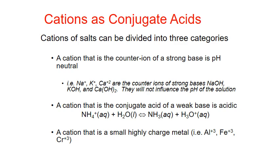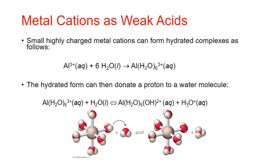Finally, metal cations that are small and highly charged will also form weakly acidic solutions. Small metal cations with high charges can form hydrated complexes with water. The water molecules are attracted to the high charge of the metal, and once bound, they are more likely to donate a proton to a free water molecule and form hydronium ion. As a result, these hydrated metal ions are associated with acidic solutions.